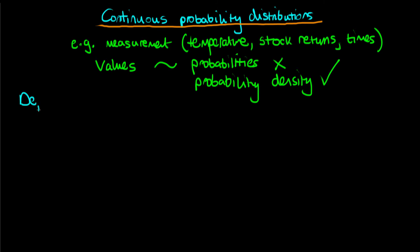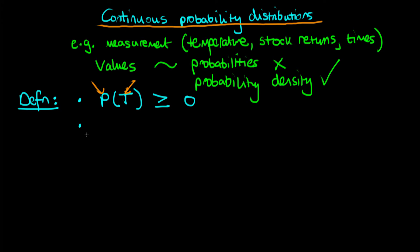So what's the definition of a continuous probability distribution? Firstly, we say that p(t), where t is a continuous random variable, has got to be greater than or equal to zero. This condition is pretty similar to what we had in the discrete case. Then, because we're dealing with a continuous density, we use the analog of summing — which is integrating. So we integrate over all potential space from minus infinity to plus infinity, and this has to be equal to one.